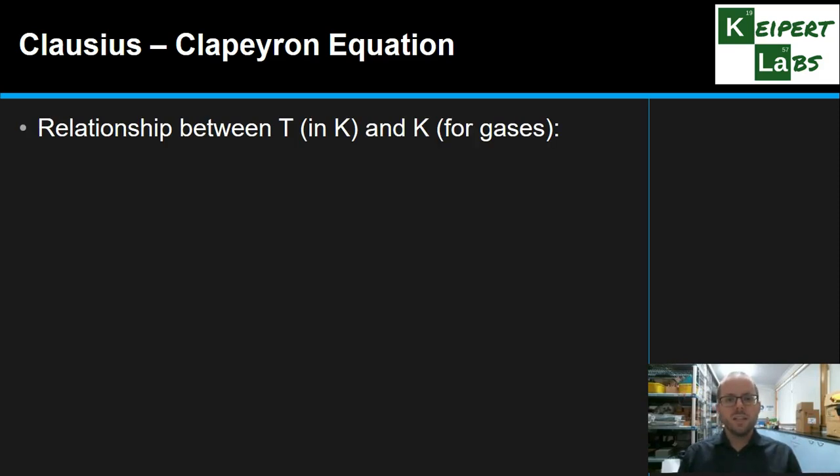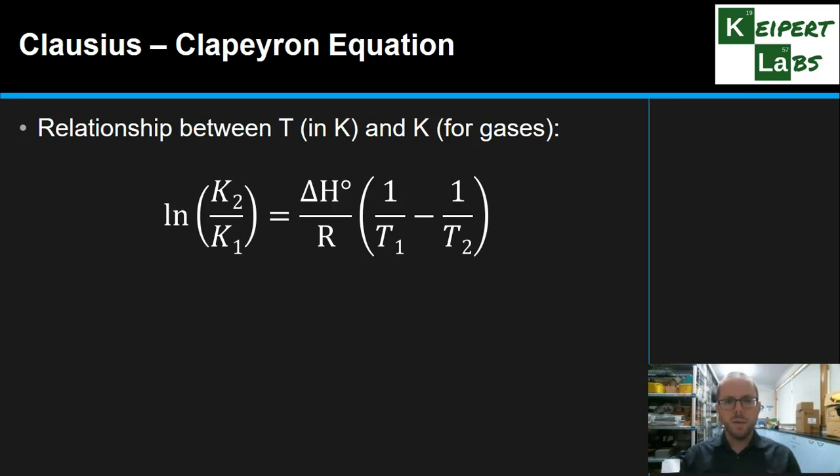Well, this is where we introduce what's called the Clausius-Clapeyron equation. I think I've pronounced that as best as I can. Don't hold me to it too much. But so, what we see is that there's actually a mathematical relationship between the temperature in Kelvin and this K for a gas system, so it would be KP if we want to be a bit more specific here. We're thinking about gas systems. And it looks like this. It's a bit of a beast of an equation. We're not going to be using this or doing any calculations to do with this. It's just to show you that there is a relationship.